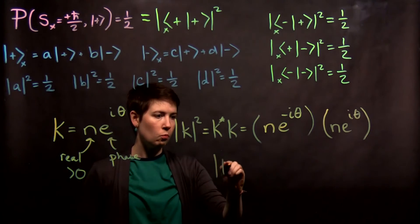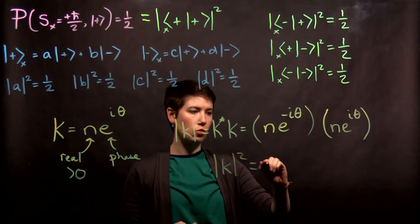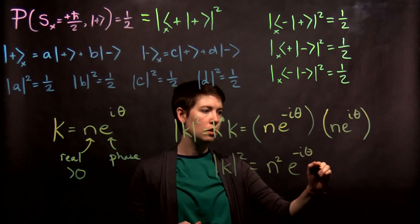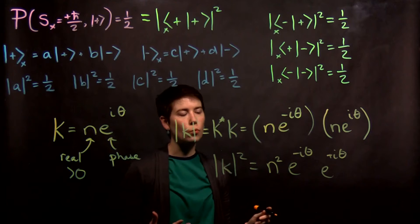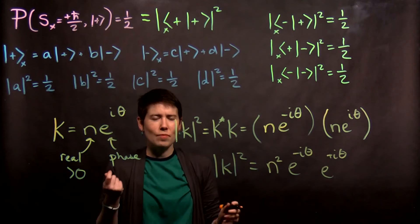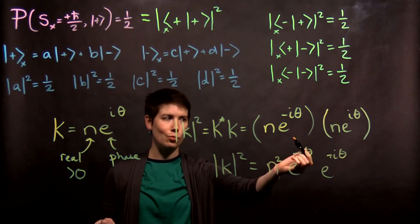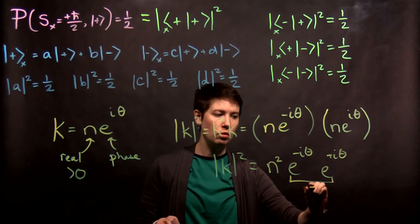So now, we multiply these two together. And you see you have n times n, which is going to be n squared. And then we have e to the negative i theta, e to the positive i theta. Now, there's a few different ways to look at this. And you might just happen to know off the top of your head that when you have e to the negative number multiplied by e to the positive number, that in fact is going to equal 1.